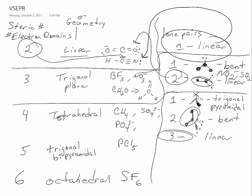Trigonal pyramidal, a good example is ammonia. And bent, a good example is water.